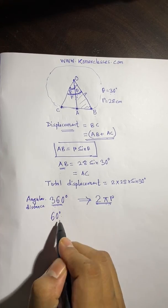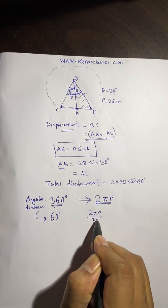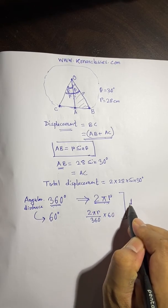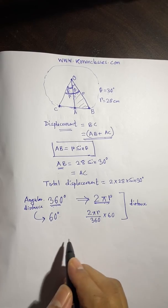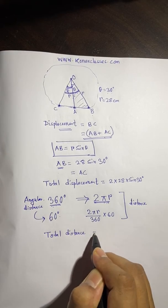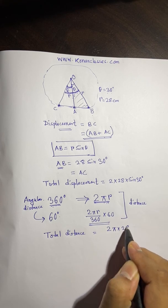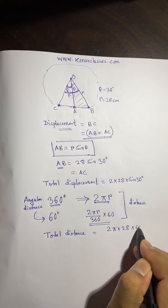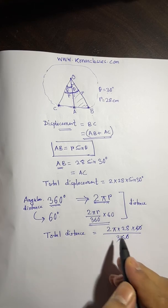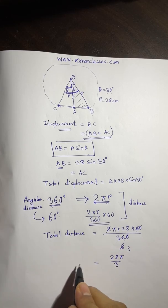For an angular distance of 60°, the arc distance equals (2πr / 360) × 60. Substituting r = 28 and simplifying — 60/360 reduces to 1/6 — the distance works out to 28π/3.